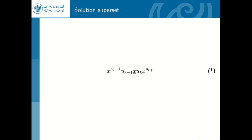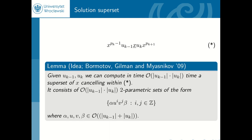When we consider this notion that x cancels within the two neighboring powers, we can analyze it from the point of view of word combinatorics. Bermotov, Gilman, and Mieznikov showed that this allows one to give a superset of all solutions to this equation. Roughly it can be constructed in time proportional to the product of the lengths of two words u_{k-1} and u_k, and the representation consists of several two-parametric words — a prefix, a power, another power, and a suffix — where every word involved is linear in terms of the two words appearing in the equation. In fact they are much shorter; the constant is around two or three.